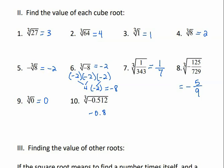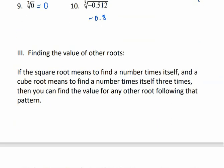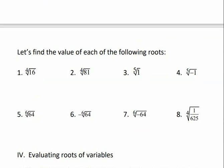We've talked about square roots and cube roots, and we can have other roots. If the square root means to find a number times itself, and a cube root means to find a number times itself three times, then you can find the value for any other root following that pattern. The fourth root of 16 means what number can we multiply times itself four times to get 16? 2 times 2 is 4, times 2 is 8, times 2 is 16 — so 2 is the fourth root of 16. Whatever is in that little pocket tells you how many times you need to multiply another number times itself to get that number. The fourth root of 81 would be 3, because 3 times 3 is 9, times 3 is 27, times 3 is 81.